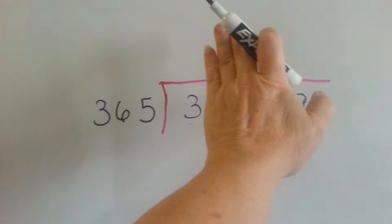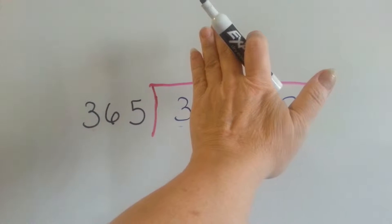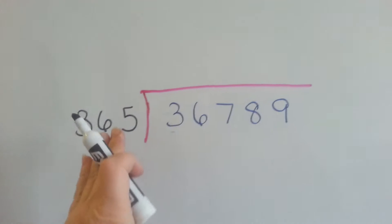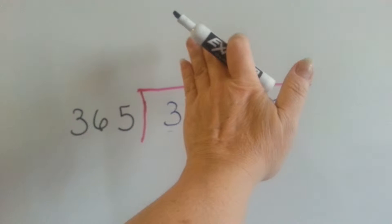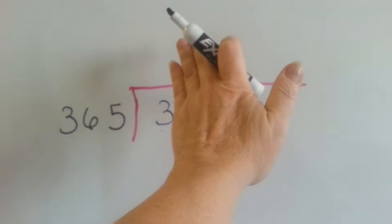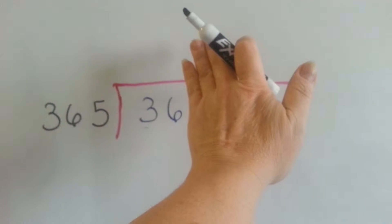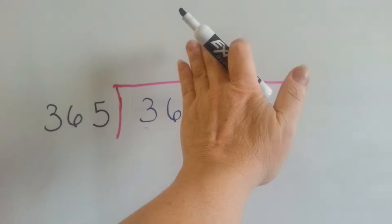We know it can't fit into the 3. We're trying to fit this number into this number. So we ask ourselves, can it fit into the 3? No, there's no way. Can it fit into the 36? No, there's no way.